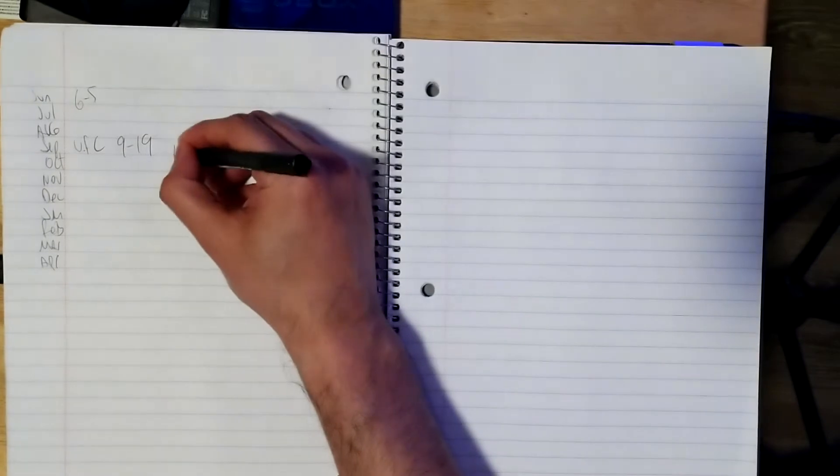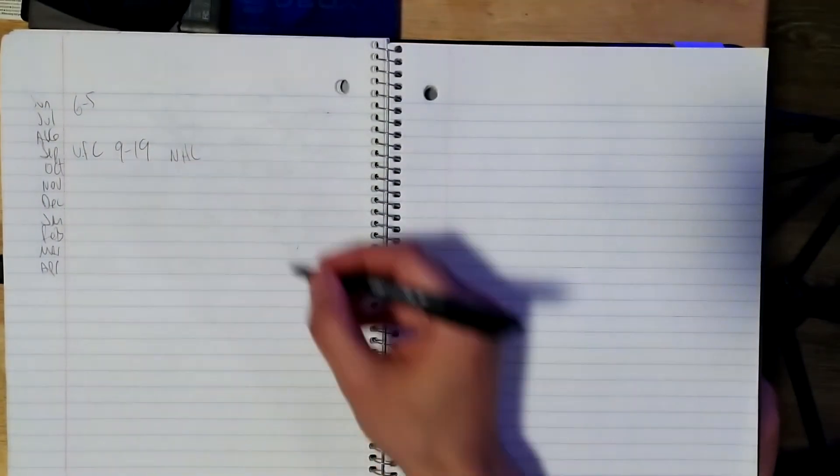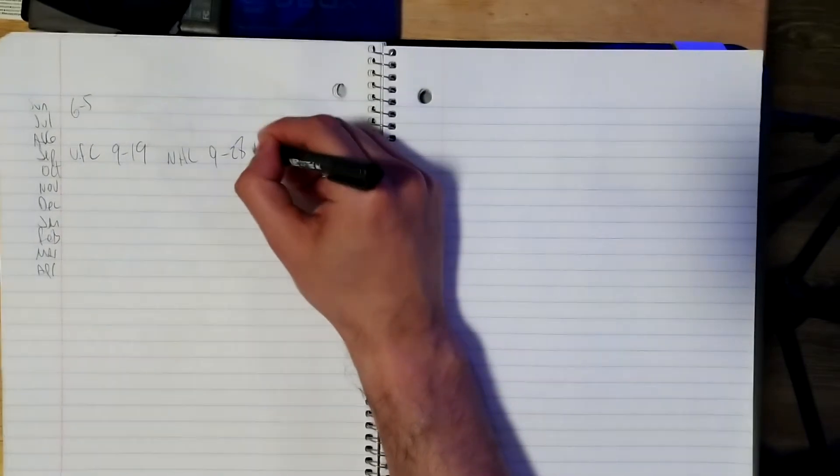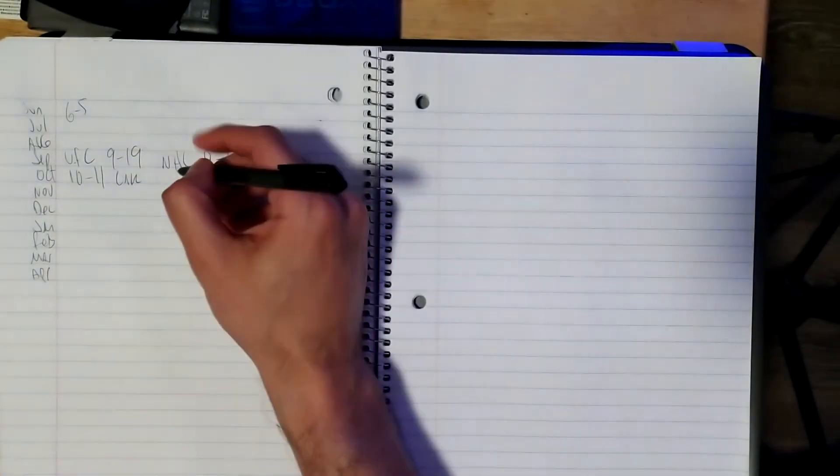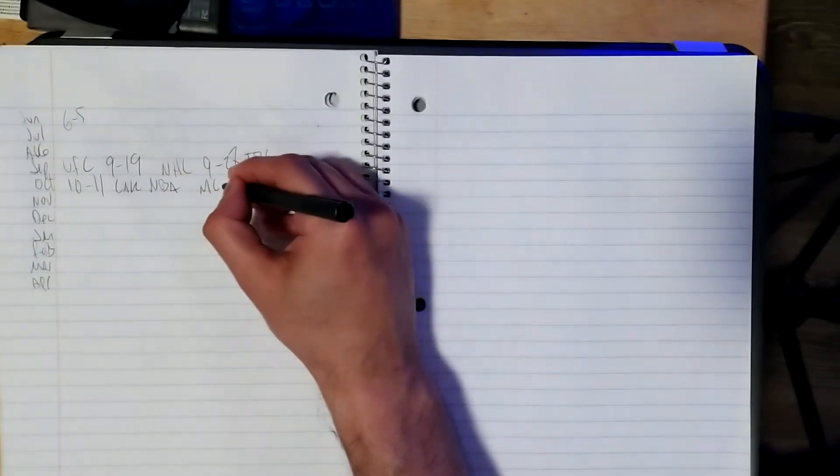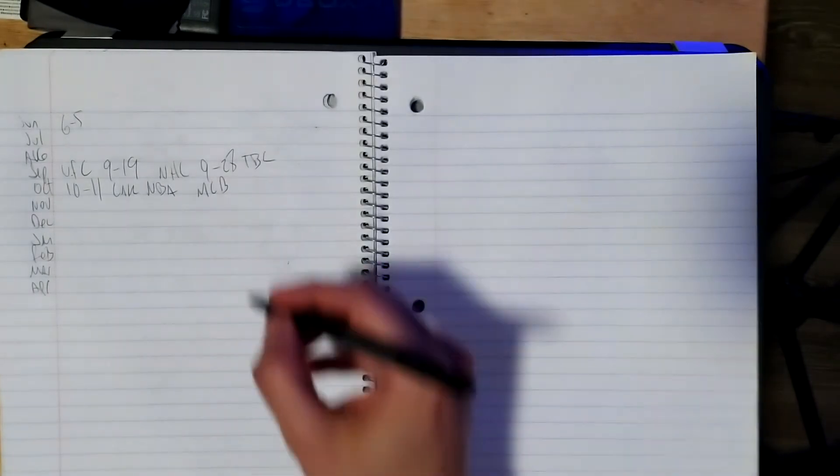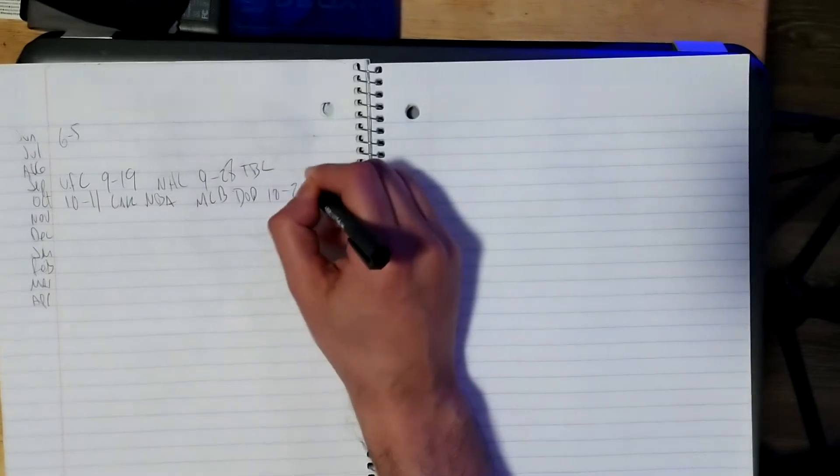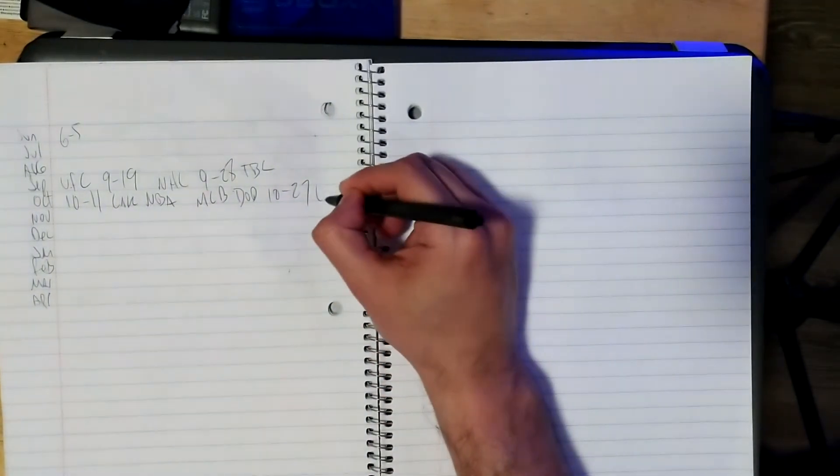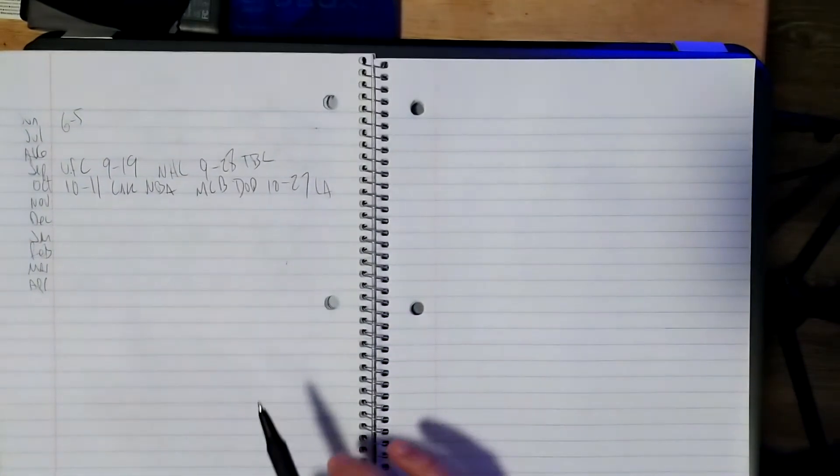In the same month the NHL Stanley Cup was playing where the Lightning beat the Stars on 9-28, so Tampa Bay wins. That's when I started to notice something very strange. In the following month in October, the Lakers beat the Heat on October 11th. Then the MLB, the Major League Baseball World Series happened where the Dodgers beat the Devil Rays, so the Dodgers won on 10-27 and that's of course LA. This is when things begin to really stand out for me.